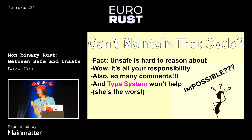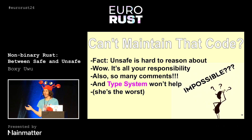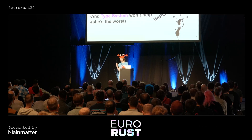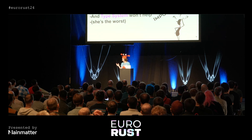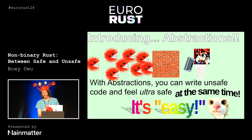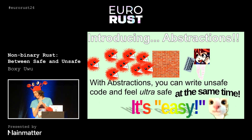But sometimes you can't do that, and you're just stuck with thousands of lines of unsafe code and you can't fully encapsulate it. But what you can do is write abstractions that just encapsulate some of the safety invariants, but not all of them.